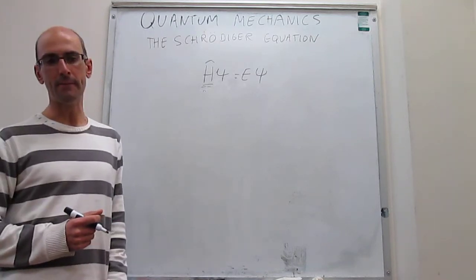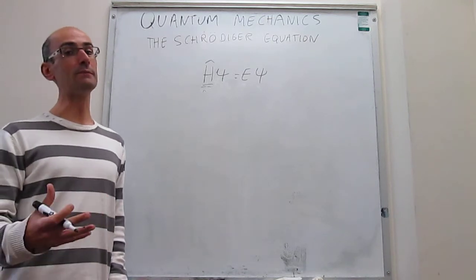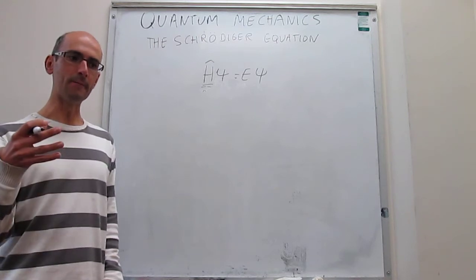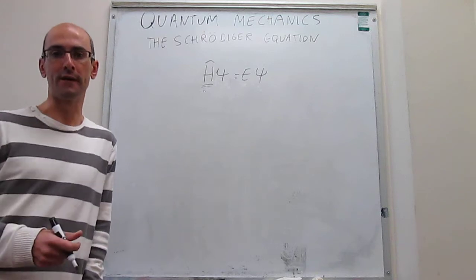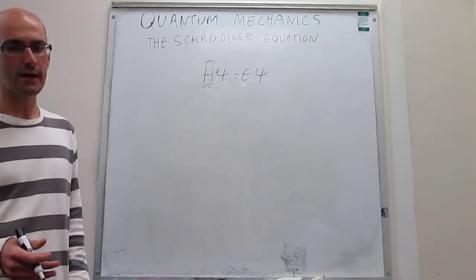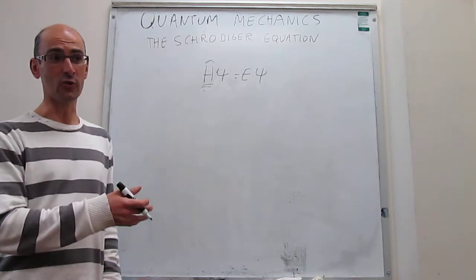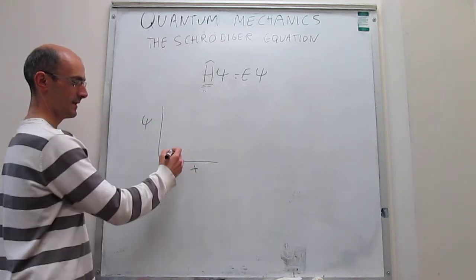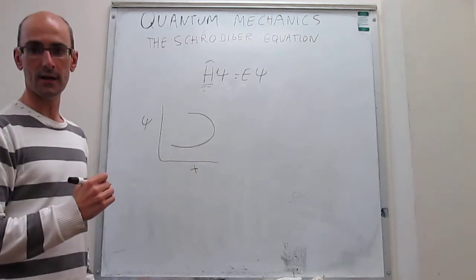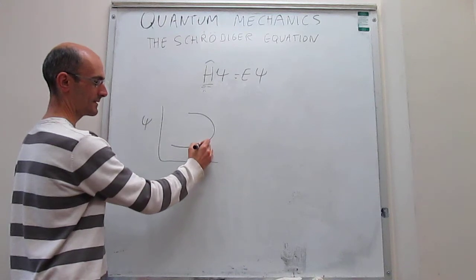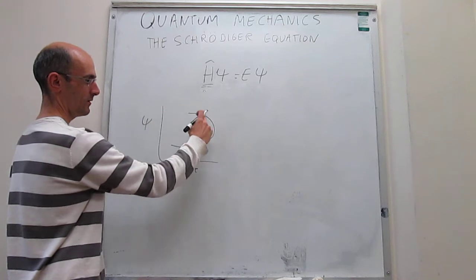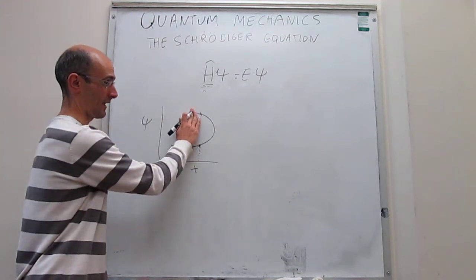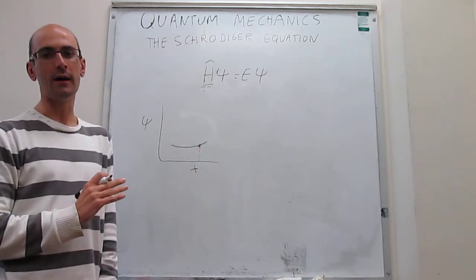As we move along, we will discover that the wave function psi is related to the probability of finding the particle in a region of space. Evaluating the wave function in a region of space gives the probability of finding a particle there. For that reason, we have constraints on what type of functions are valid wave functions. The wave function has to be single-valued — if a particle is at distance x, there can only be one value of the wave function there, because you can't have two probabilities for finding the particle in the same region of space.